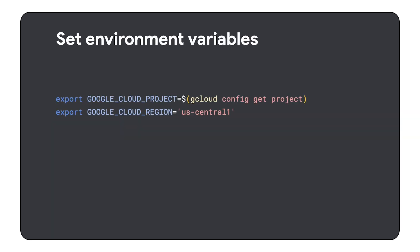Next, you need to set environment variables used during Vertex SDK initialization. You should set the Google Cloud project and Google Cloud region variables. Remember to use a project which has all necessary APIs turned on. As for the region, I am going to select US Central 1, but feel free to use a different one closer to your users.